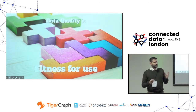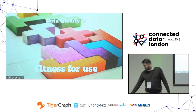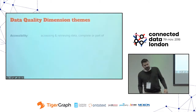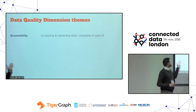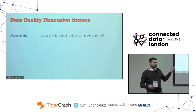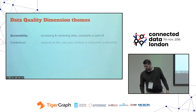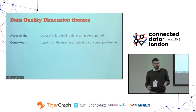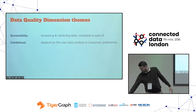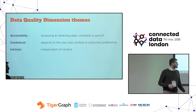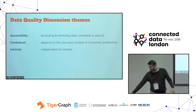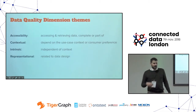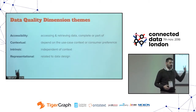There are different dimensions that capture data quality. There are four main things: accessibility, which means ways of accessing and retrieving data; contextual dimensions, related to the user context or use case; intrinsic ones, which are independent of any context and are universal; and representational ones, about how you represent and design the data.